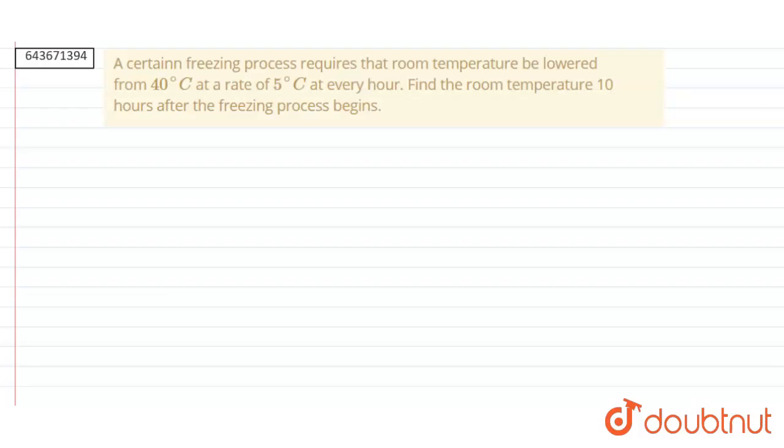The question is: A certain freezing process requires that the room temperature be lowered from 40 degrees Celsius at a rate of 5 degrees Celsius every hour.